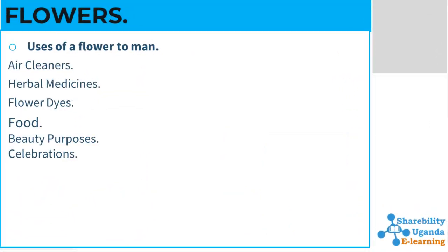Let us discuss the uses of flowers to human beings. Flowers are used as air cleaners. You have likely seen flowers being planted along verandas and in compounds — they are used to decorate homes, but also to clean the air that we breathe. Plants absorb carbon dioxide and produce oxygen, which is used by humans for breathing. Flowers can also be used as herbicides and can be locally used as medicine to treat several diseases.